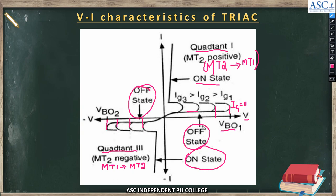When MT2 is positive, current flows from MT2 to MT1. When MT2 is negative, current flows from MT1 to MT2. These VI characteristics of TRIAC are very important — in examinations they may ask for one or two marks. Note this point. Next session we will discuss other power semiconductor devices. Thank you.